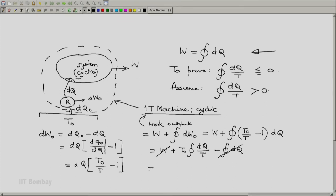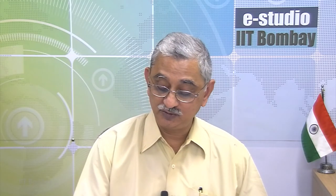So this becomes T0 into integral of dQ by T which turns out to be greater than 0 with our assumption. But this violates the second law of thermodynamics as represented by the Kelvin-Planck statement. And the only way we have violated it is by assuming this to be true. And that means this assumption is false.